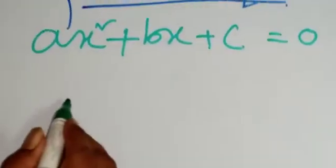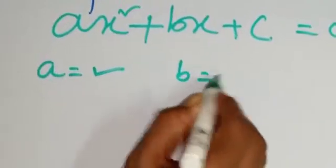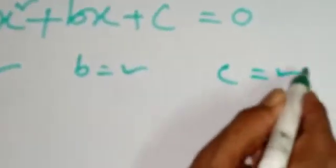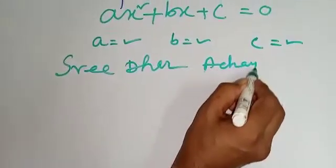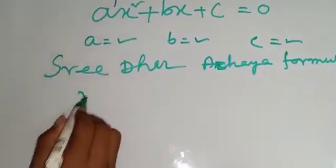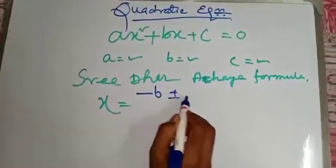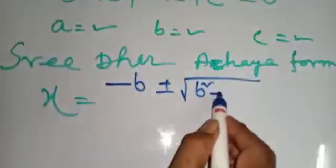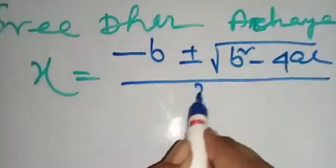Any quadratic equation compare with this, we will get the value of a, b and c. Now, applying Sridhar Acharya formula. x equal to minus b plus minus root over b square minus 4ac by 2a.